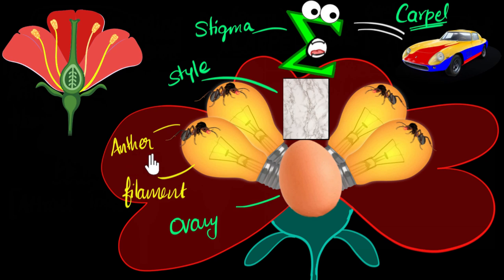So I know anther, but the moment I hear anther, if I remember this picture, I know anthers are the top part of the male reproductive part. And we know what these anthers are saying. The female ants are telling all the male ants, stay there, men. So stay, men. Stamen.